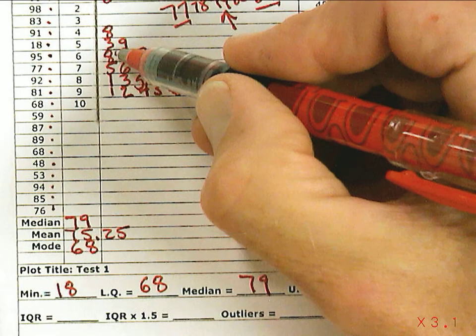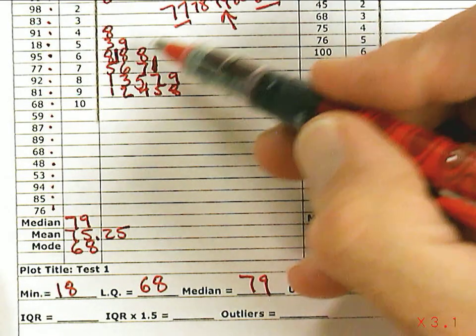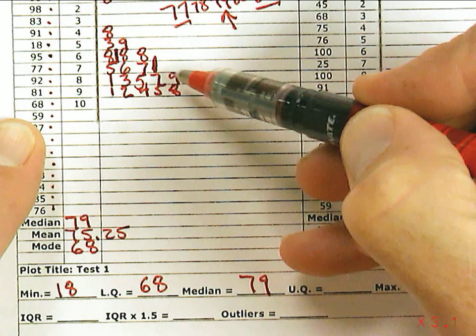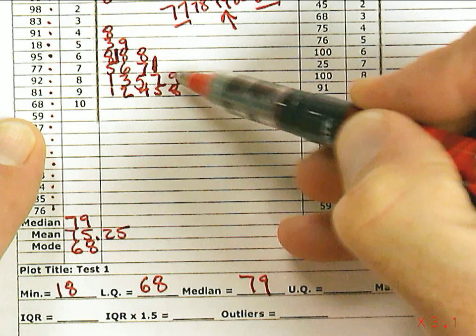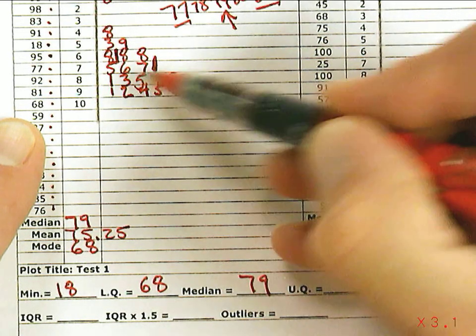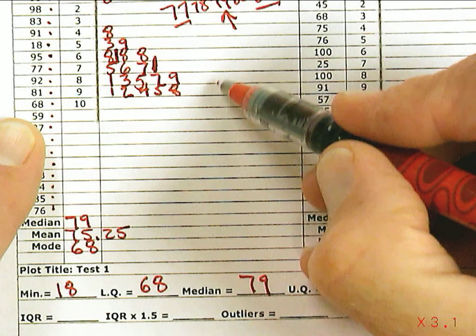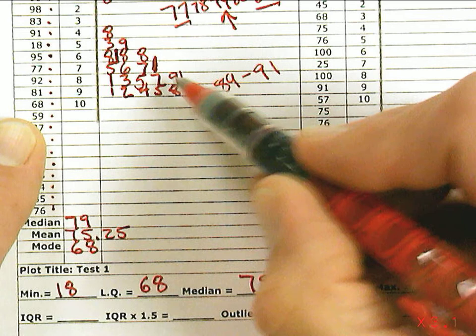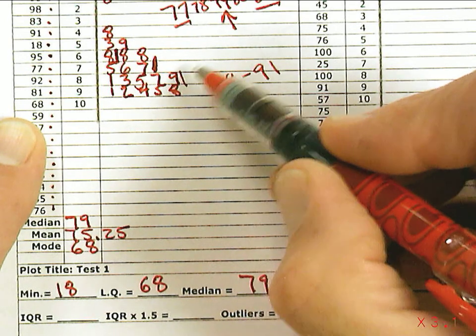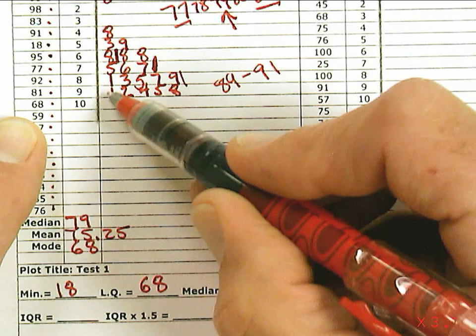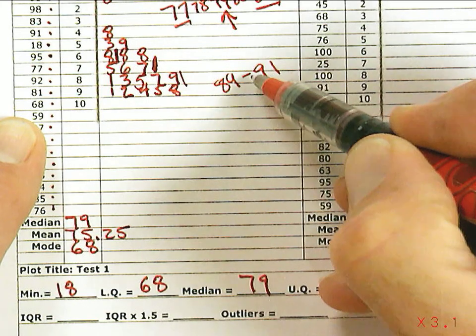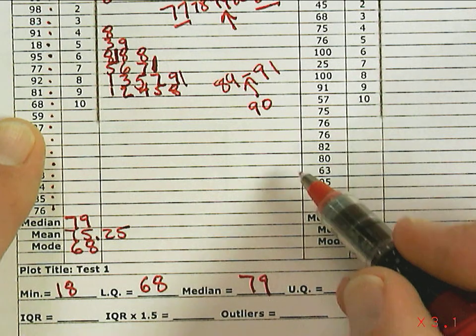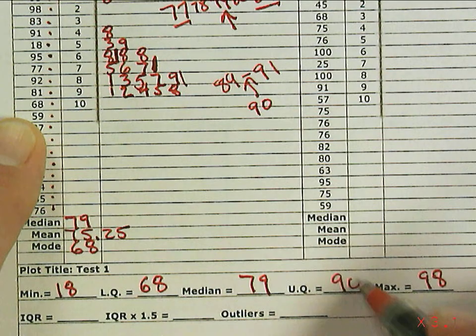That's the middle of the bottom half. Now I want to find the middle of the top half by doing the same thing, counting in 1, 2, 3, 4, 5. You can see that 89 and 91, 89 is the top of the upper half, the middle of the half, and the bottom of the middle of the upper half is 91. So halfway between there is 90. My upper quartile is 90.